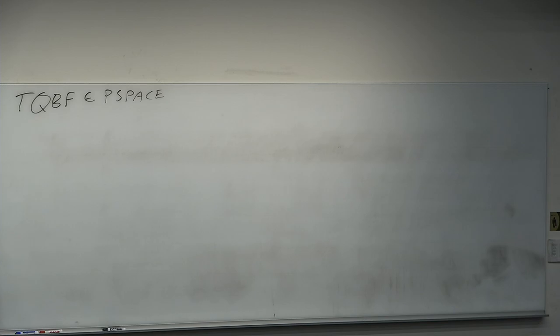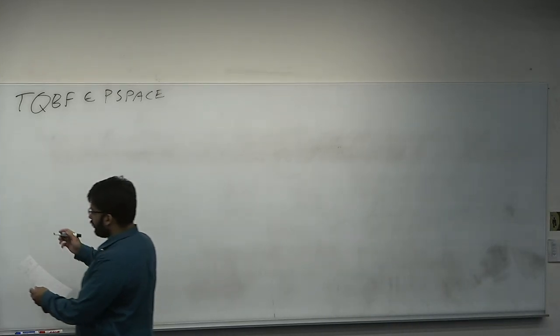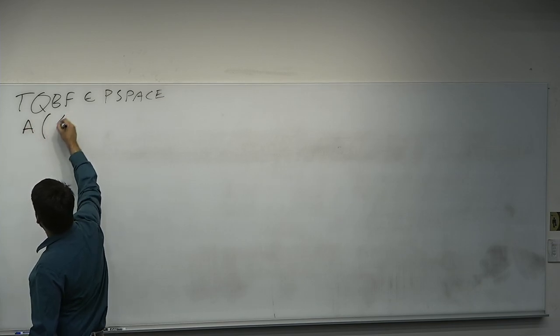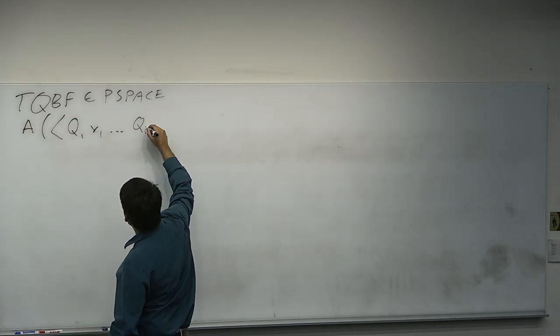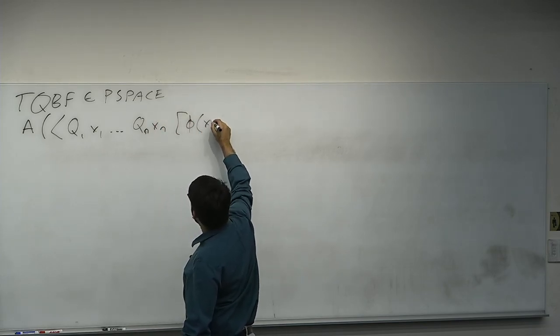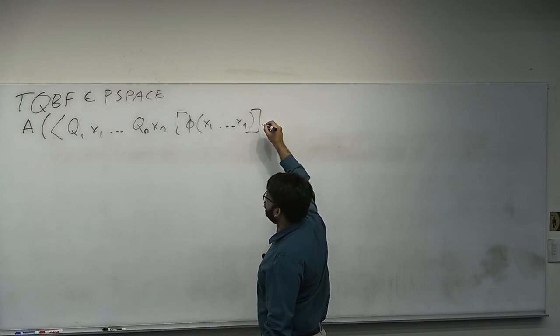The approach: iterate over the quantifiers from left to right. If you encounter a for-all, check each case and make sure it's true. If you encounter an exists, check that at least one is true. We'll do this recursively. Algorithm A takes as input a quantified Boolean formula Q1 X1 ... Qn Xn phi(X1,...,Xn). If n equals 0, just evaluate — every variable has been plugged in; compute all ANDs and ORs and return true or false.